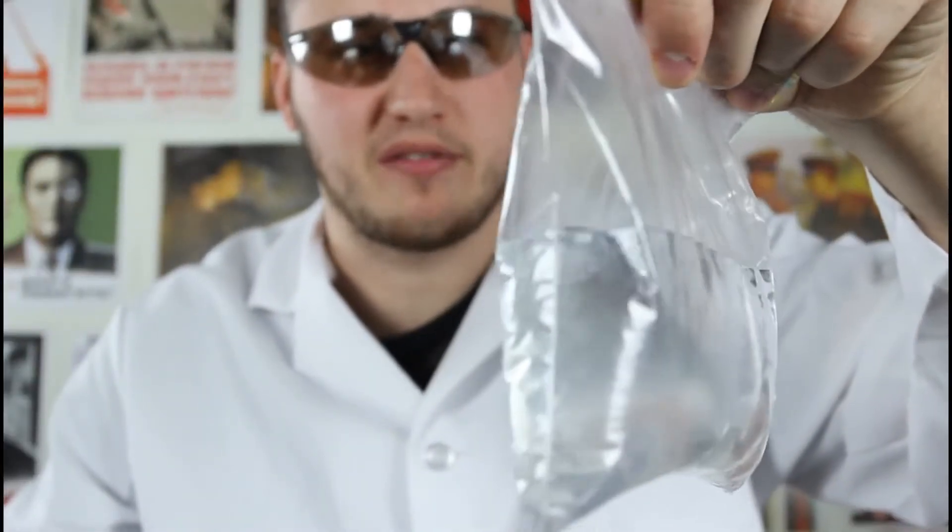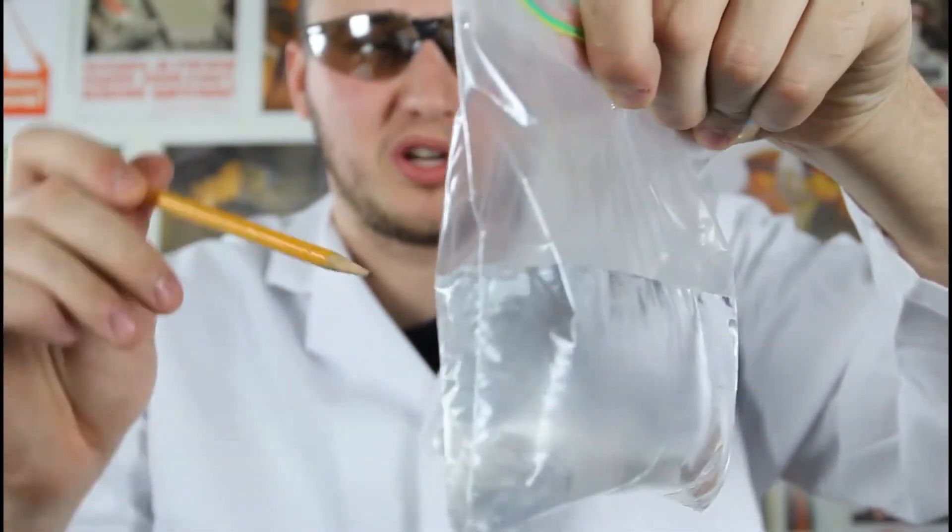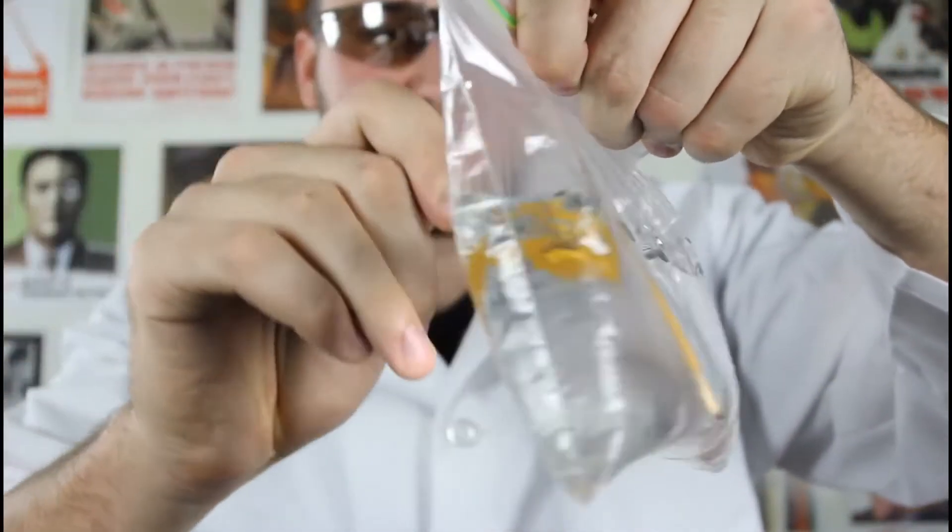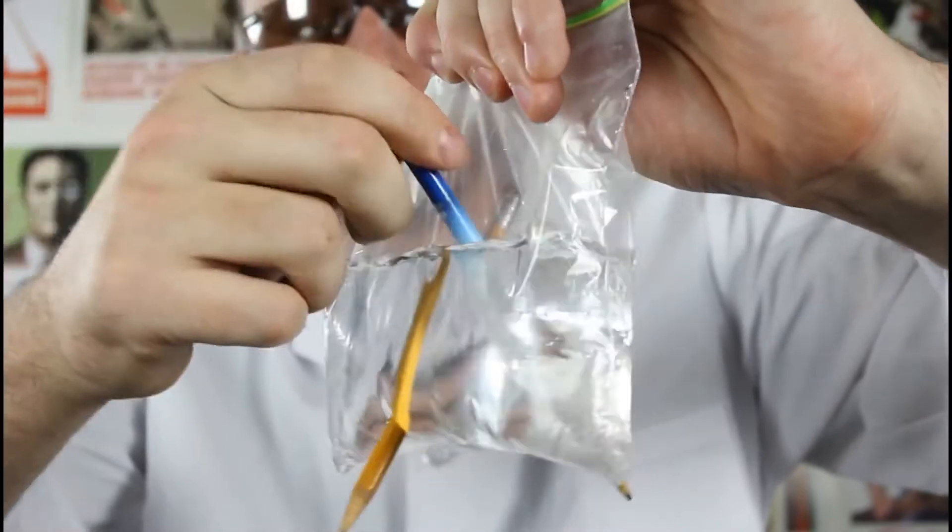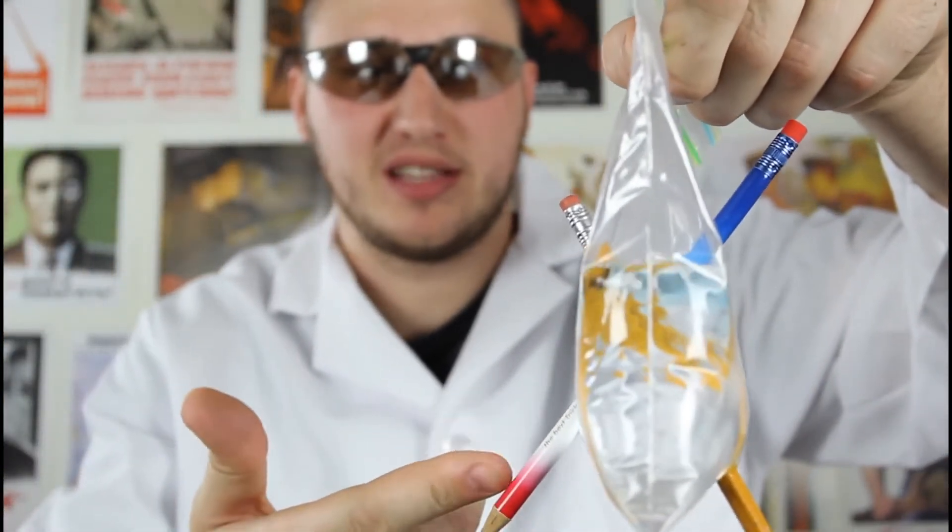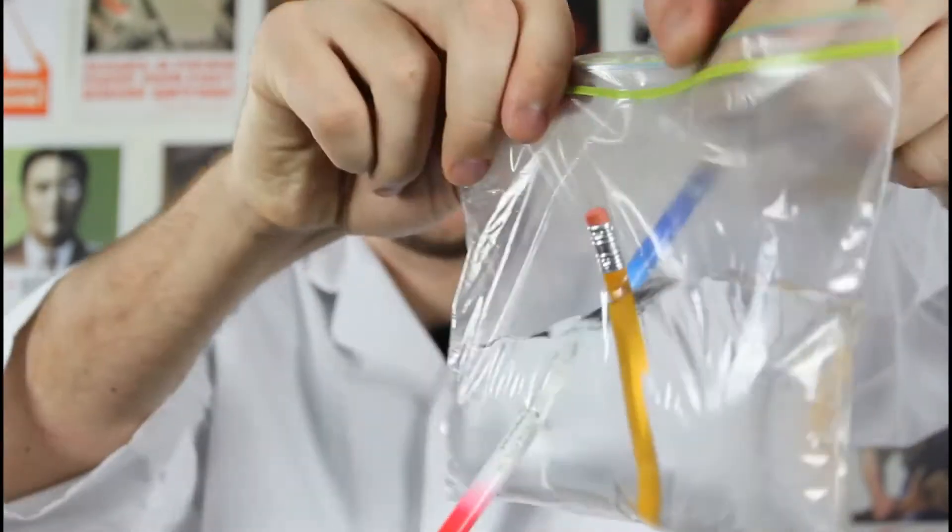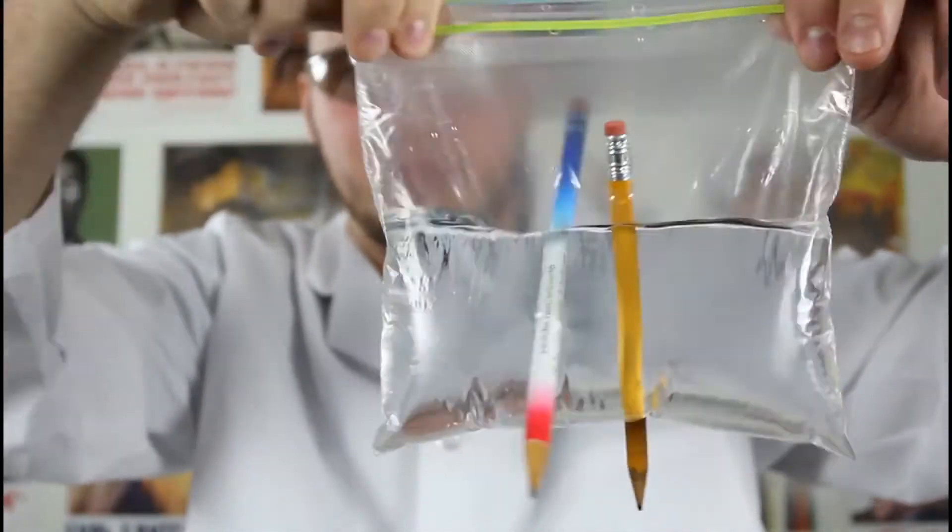Fill up ziplock bag with water and get couple of pencils. And then what we're gonna do is stick it through. And look, it's not leaking at all. This is what it called leak proof bag. The reason why the pencils are sealed up the holes so it's not gonna leak, which is really cool, huh? Very cool experiment.